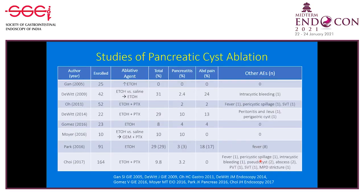There are adverse events with this technique, depending on which material is injected. Ethanol alone may lead to pancreatitis in 2.4 to 10%, and abdominal pain in 10 to 20% of patients. The use of saline instead of ethanol for lavage may decrease adverse events. In one study, pancreatitis occurred at 10% but only in patients who received ethanol lavage. Some very rare adverse events include fever, interstitial bleeding, peritonitis, abscess formation, pseudocyst formation, venous thrombosis, and main pancreatic duct stricture. It is hypothesized that ethanol leads to these rare side effects.